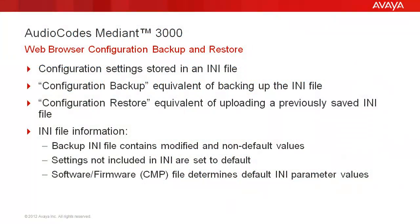Mediant 3000 configuration settings are stored in an INI file on the Media Gateway. Performing a backup of the Mediant 3000 configuration is actually a backup of the INI file. Restoring the configuration is accomplished by uploading a previously saved INI file. The backed up INI file includes only parameters that were modified and parameters with other than default values. All settings not included in the file are set to default. The software or CMP file loaded to the Media Gateway determines the default parameter values.